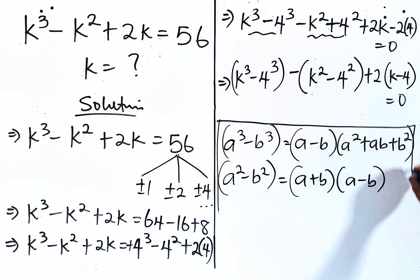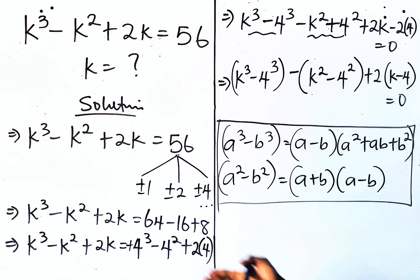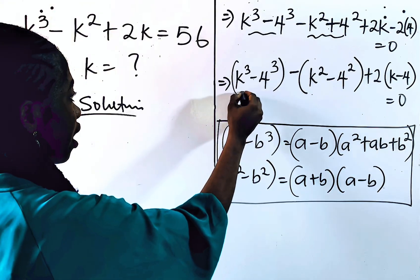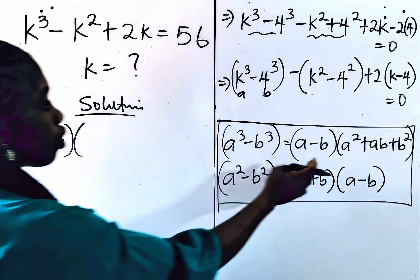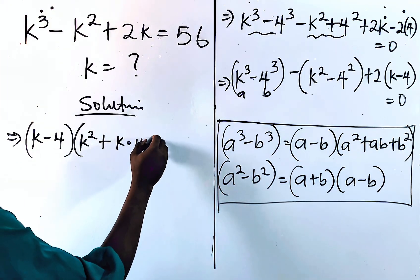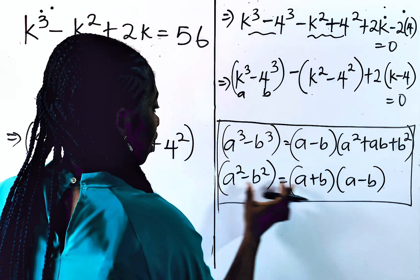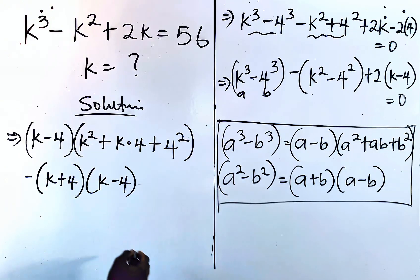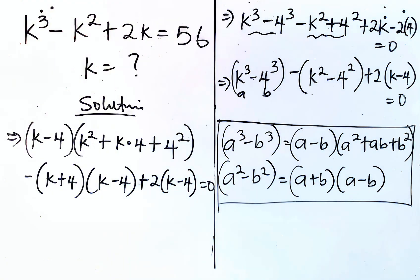These are your algebraic identities. For this, we can apply the difference of cubes. So this is our a and this is b. We are going to have (k minus 4) into k squared plus k multiplied by 4 plus 4 squared. Then bring down your subtraction sign. For this, apply the difference of two squares, so you have (k plus 4)(k minus 4). Then plus 2 into (k minus 4) and everything is equal to 0.